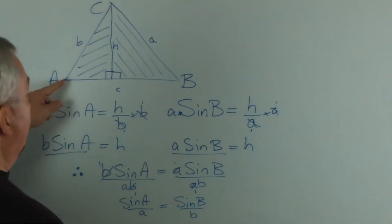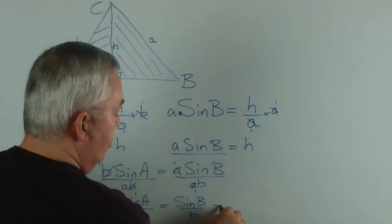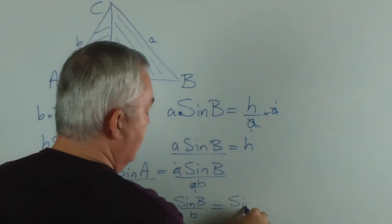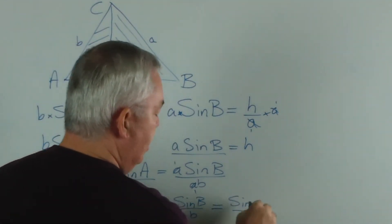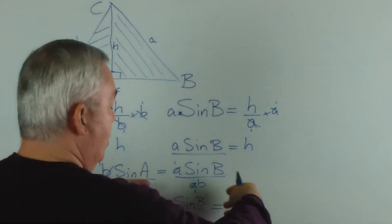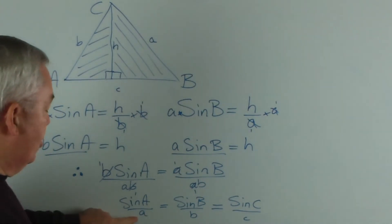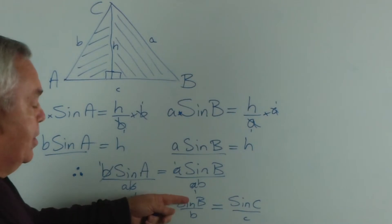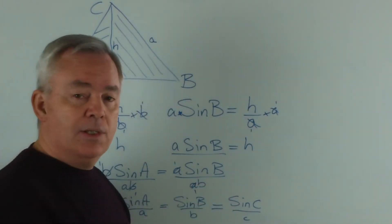Now, if we drew, instead of having the height drawn here, if we drew it from another vertex, we would be able to prove in the same way that it equals sin C over c. And there's your sine rule. Of course, you can quote it with the lengths on top and the sine values on the bottom: a over sin A is the same as b over sin B or c over sin C.